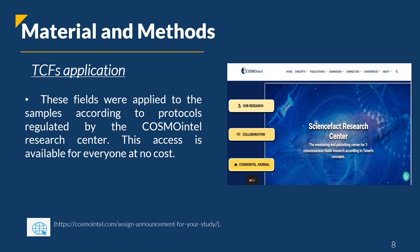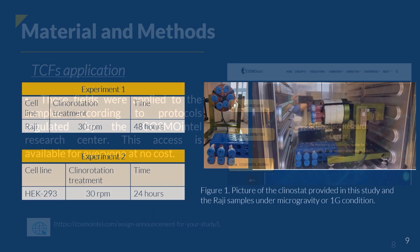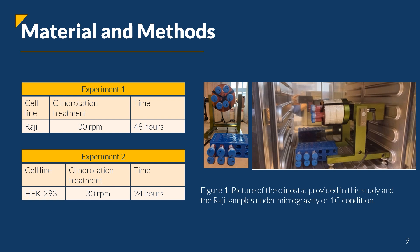These fields were applied to the samples according to Cosmo-Intel Research Center, and this access is available for everyone at no cost. In the first experiment, the Raji cell line was exposed to microgravity by klinostat rotation at 30 rpm for 48 hours. In the second experiment, HEC-293 cell lines were subjected to this stress for 24 hours. Figure 1 illustrates Raji cells in the klinostat device in Earth's gravity condition. Half of the samples were under the influence of pharodermony as one type of T-Consciousness Fields.